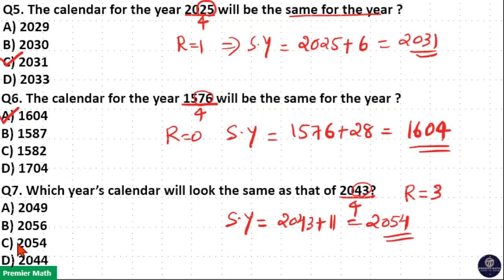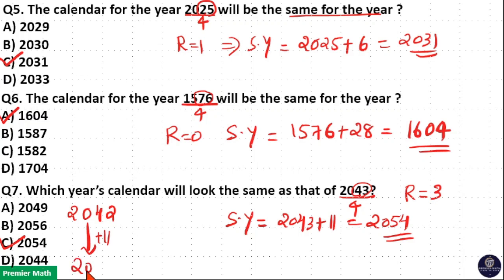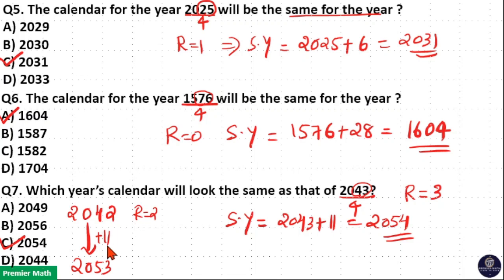So option C is your answer. Similarly, for 2042: when you divide 2042 by 4, the remainder is 2. When the remainder is 2 or 3, add 11 to the given year. So 2042 plus 11 equals 2053, meaning the 2053 and 2042 calendars are the same.